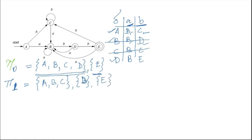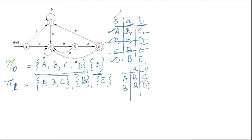Now we have A, B, and C in a set. If we compare the same way: at state A, giving input A leads to B, and giving input small b leads to C. At state B, giving small a leads to B itself, and giving small b leads to D. Now D is a member of a different set, but C is a member of the same set. So we can say that A and B are different.